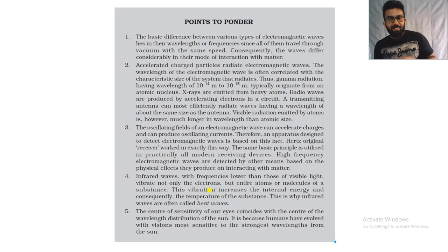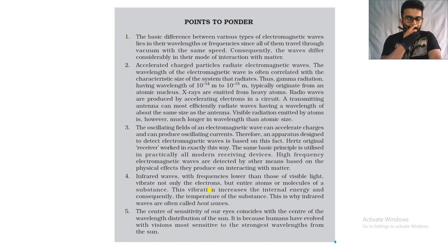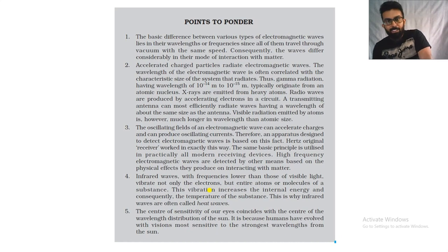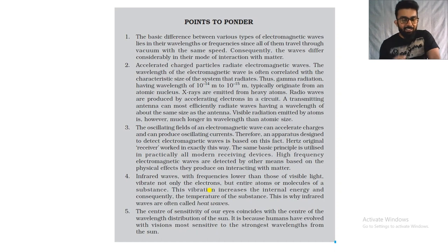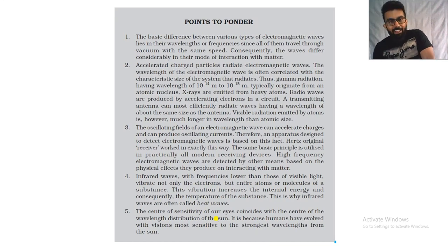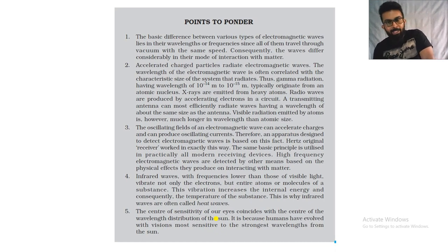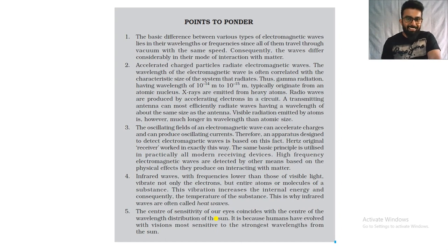Finally, why are our eyes most sensitive to the visible region of the electromagnetic spectrum? The reason is our evolution on Earth. Our eyes have adapted to the strongest radiations emitted from the Sun — the visible region corresponds to the central wavelength distribution of the Sun's emission spectrum, so our eyes are most sensitive to exactly that range.